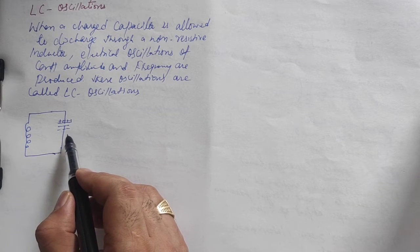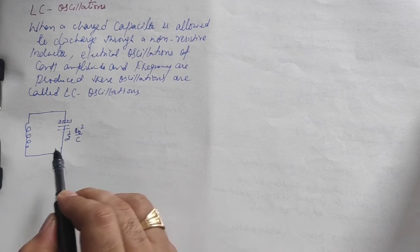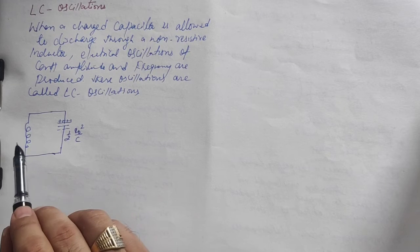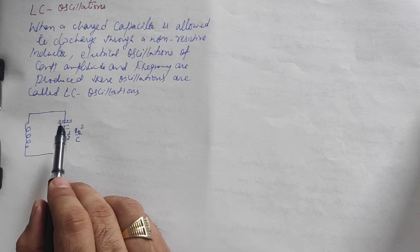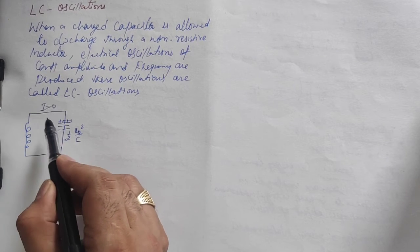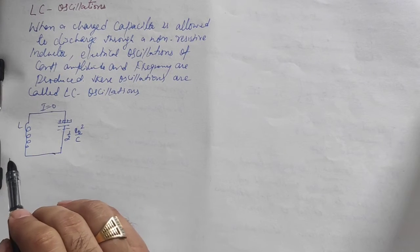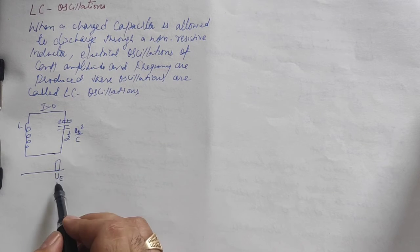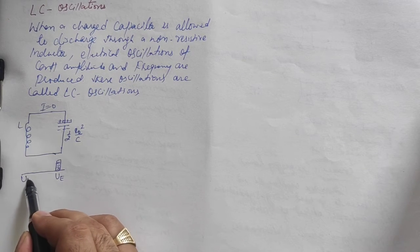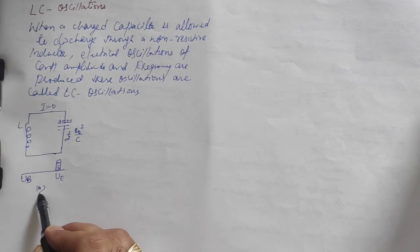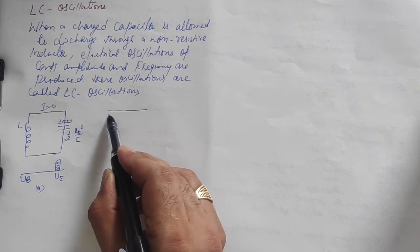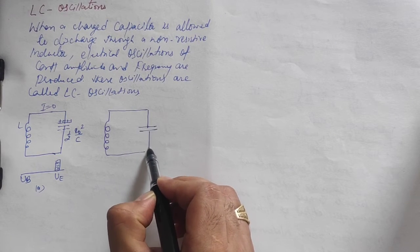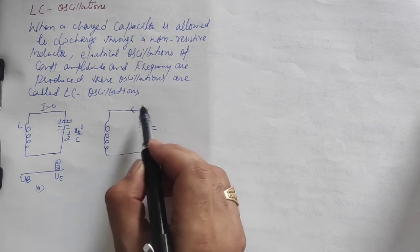Energy is stored as electric energy, equal to half Q₀²/C. No current is flowing right now, so the magnetic energy stored is zero. But as soon as we close the circuit, look at the second diagram. In this diagram, you can see the electric energy in the capacitor is maximum initially.